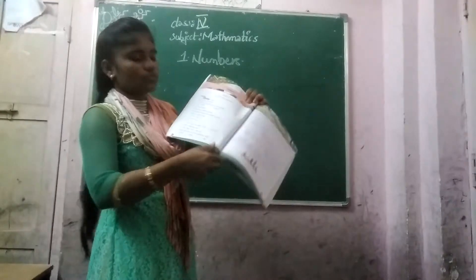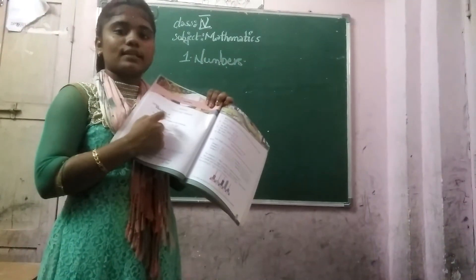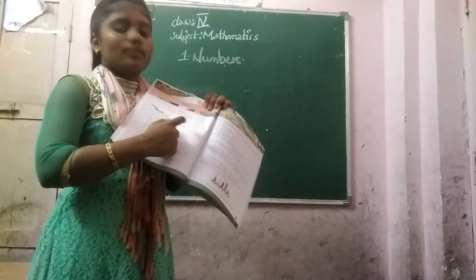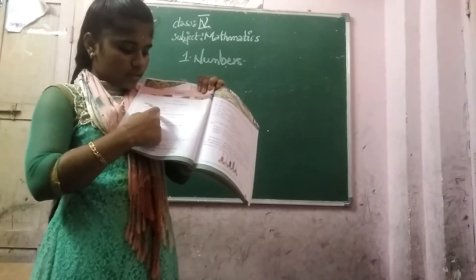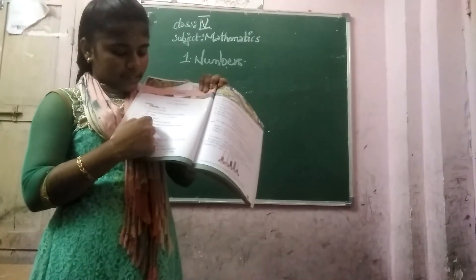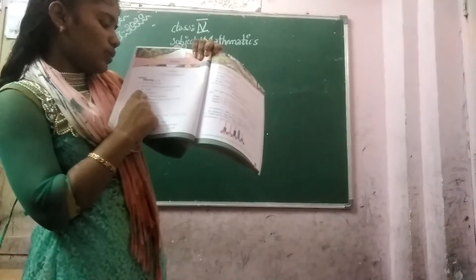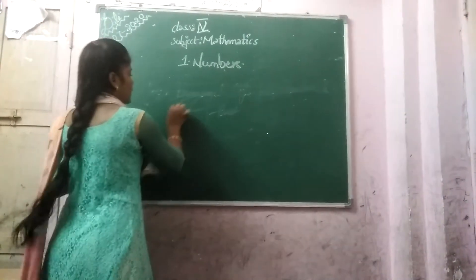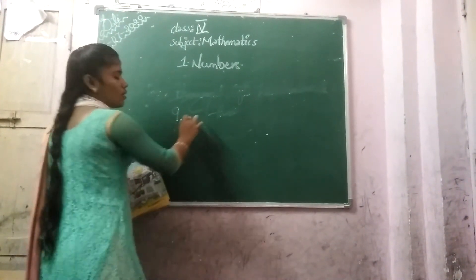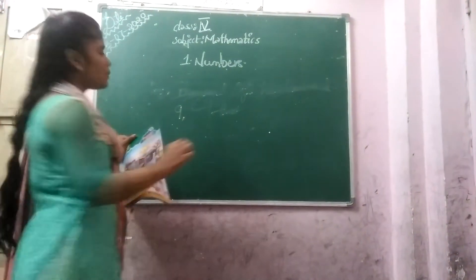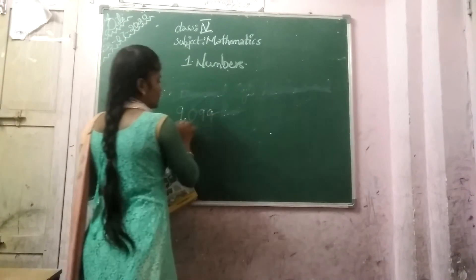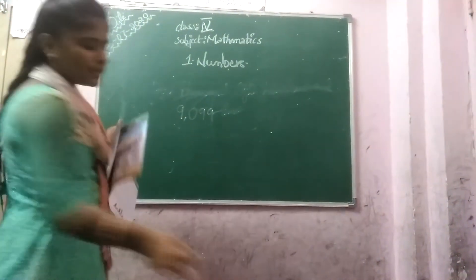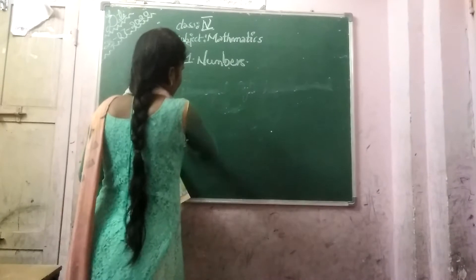And next, write in figures. Here they have been given in figures and told to write in number names. Here they have been given in number names, so you should write in figures. For example: 9099 — so 9000. There is no number in the hundreds place, so you should keep 0, and then 99. So 9000, 99 — write like this.